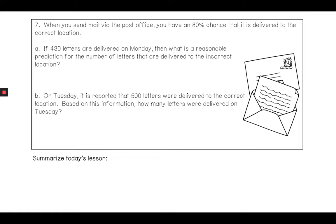Last one: When you send mail via the post office, you have an 80% chance that it is delivered to the correct location. If 430 letters are delivered on Monday, then what is a reasonable prediction for the number of letters that are delivered to the incorrect location? That's kind of a trick question. When we set up our cross product, we say the number of letters that were delivered was 430—that's the total.